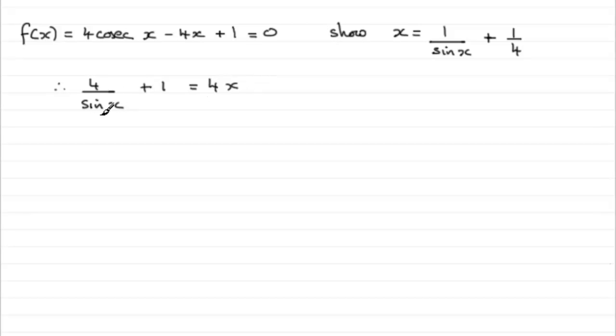So I'm going to get rid of the sin x, get rid of the fraction, by multiplying both sides by sin x. So 4 over sin x times sin x is just going to be 4. Then we're going to have 1 times the sin x, which will be sin x, and then 4x times sin x is going to be 4x sin x.